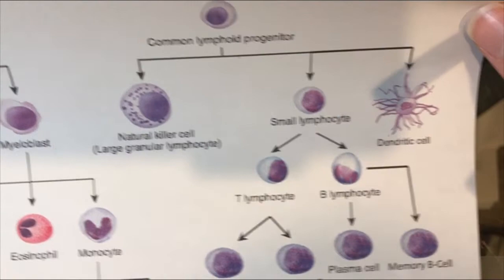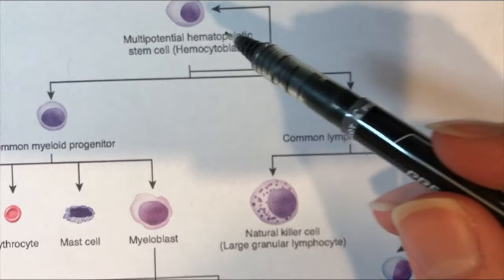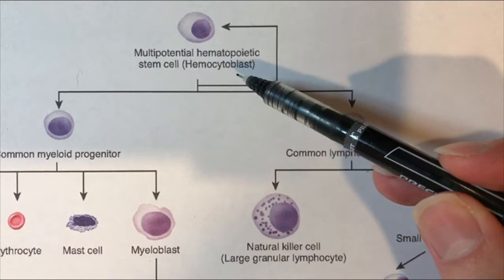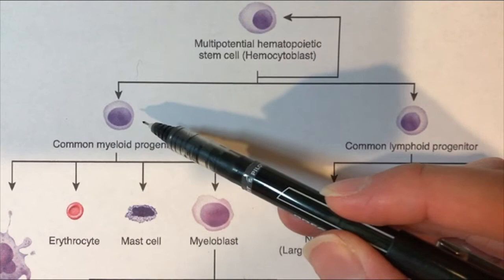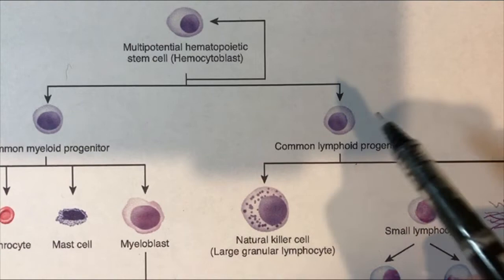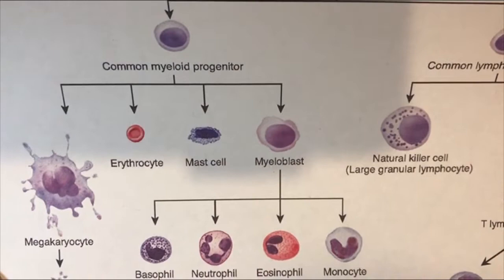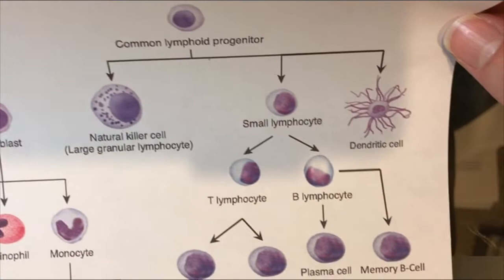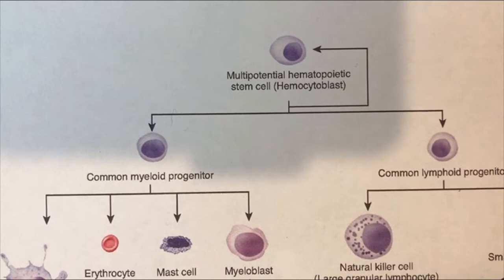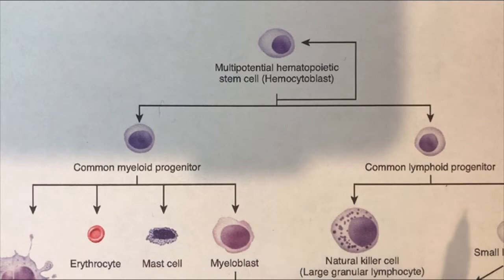So just a quick orientation to this worksheet: this family tree of cells is essentially showing you the cellular differentiation that happens from a stem cell called a hemocytoblast, which turns into either a common myeloid progenitor stem cell or a common lymphoid progenitor stem cell. From there, those stem cells can further undergo cellular differentiation to turn into different kinds of cell types. Let's start off with differentiating what is a white blood cell on the worksheet and what is not a white blood cell.